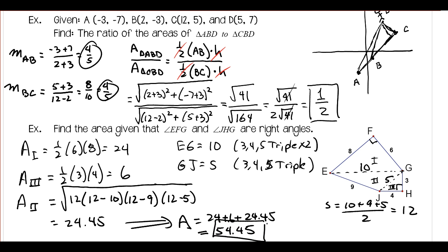Even though you have Heron's Formula for finding the area of any triangle, use it as a last resort — if there are easier methods, like one half base times height for right triangles, use those instead. As always, make sure you're working through the homework problems and asking questions when you have them. Be honest with yourself about whether you can solve problems independently without help or referring to solutions — that's what you'll need to do on quizzes and tests. See you next time.